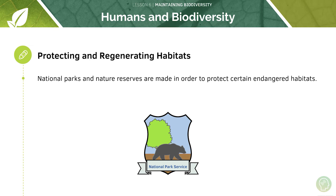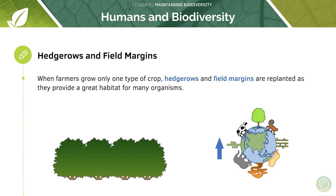We've also protected and regenerated habitats — national parks and nature reserves are created in order to protect certain endangered species. Also, hedgerows and field margins are often put in place by farmers and are replanted as they provide a great habitat for many organisms, which in turn increases biodiversity. When farmers lay out an area for their farm they often have to undergo some deforestation or chopping down of hedgerows, but once they've grown their crop they can then replant these hedgerows along field margins, therefore restoring this habitat for many organisms.